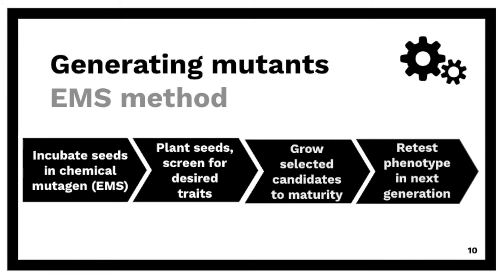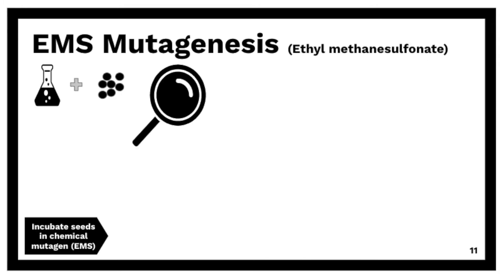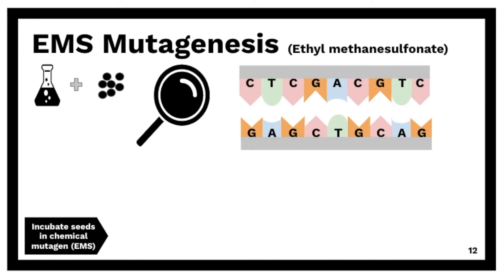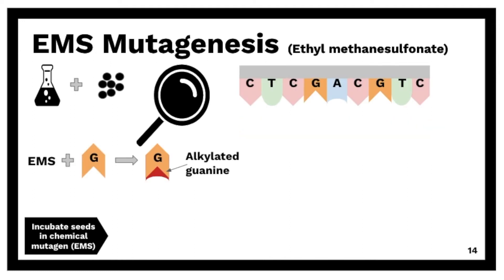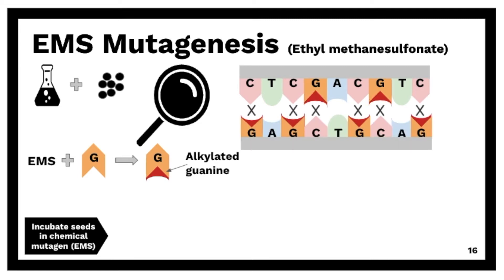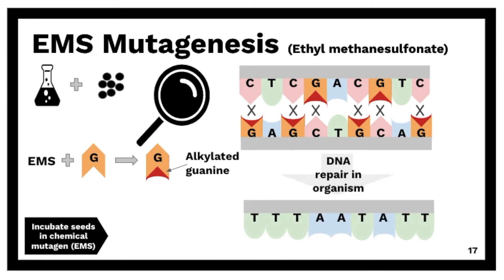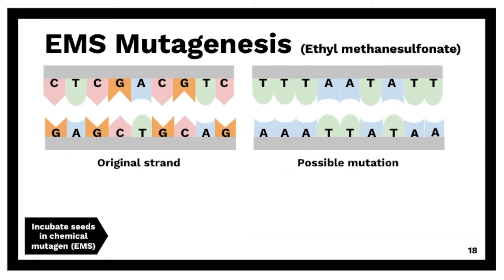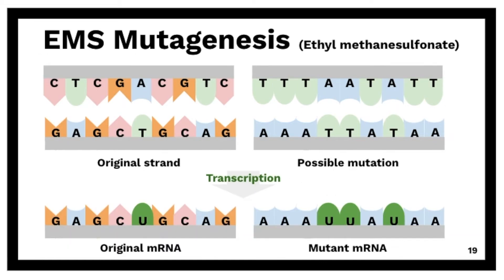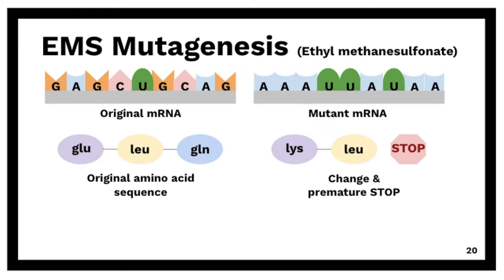The EMS method, or ethylmethanesulfonate, is an organic compound that produces random mutations in the genetic material through nucleotide substitution. First, we take our seeds and expose them to the chemical mutagen. This causes the alkylation of guanine — with this change, guanine can now pair with thymine but not cytosine. Through DNA repair, the original GC pair is replaced with adenine-thymine. This mutated strand of DNA will then affect the mRNA, which will later affect the individual amino acids, bringing changes in protein structure and function.